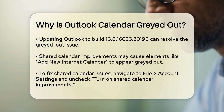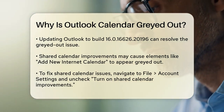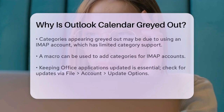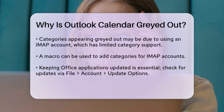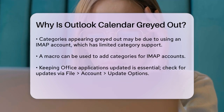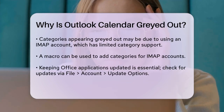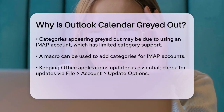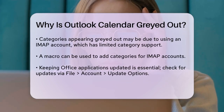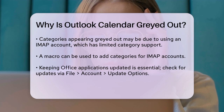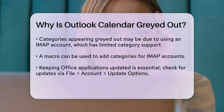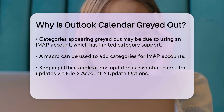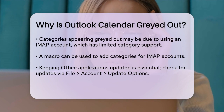If the issue is with categories looking grayed out or muted, there are a few things to check. One reason could be that you're using an IMAP account, which doesn't support categories as fully as other account types. You can use a macro to add categories in this case. Another solution is to ensure your Office applications are up to date.